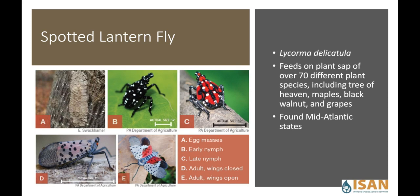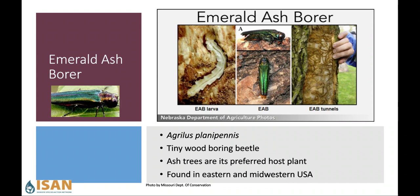The spotted lanternfly is mostly found in New York, Pennsylvania, and other mid-Atlantic states, which are doing a good job trying to contain it and keep it from spreading. Next is the emerald ash borer — a tiny, bright shiny green insect about the size of a penny. It likes to eat only ash trees, chewing through the woody part under the bark. It's been in the U.S. since 2002 when it was first found in Michigan, and has since eaten its way through 35 different states.